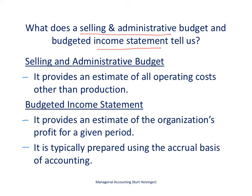We're going to start with the selling and administrative budget. It provides an estimate of all of the operating costs other than production. The budgeted income statement provides an estimate of our profit for a given period — our revenues, expenses, and the resulting profit. It's typically prepared using the accrual basis of accounting.